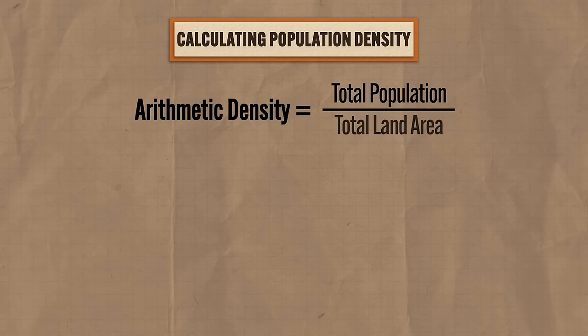When it comes to calculating population density, you need to know the three methods geographers use. The first is arithmetic density, which is the total population divided by the total land area — including all land, even the uninhabitable parts. Because this measure includes every square inch of land, the result doesn't necessarily tell the whole story. For example, Taiwan has one of the highest population densities in the world, but three quarters of its people live on one third of its land area — arithmetic density doesn't account for this.